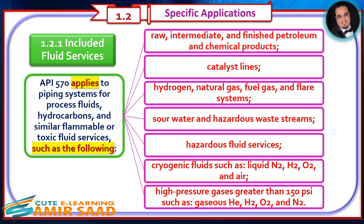Included Fluid Services: API 570 applies to piping systems for process fluids, hydrocarbons, and similar flammable or toxic fluid services, such as the following — raw, intermediate, and finished petroleum and chemical products; catalyst lines; hydrogen, natural gas, fuel gas, and flare systems; sour water and hazardous waste streams; hazardous fluid services; and cryogenic fluids such as liquid N2, H2O2, and air.